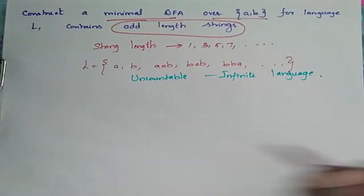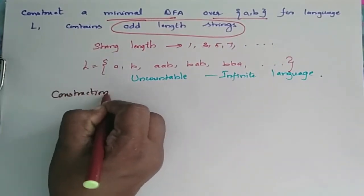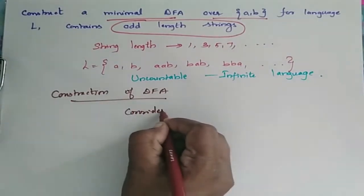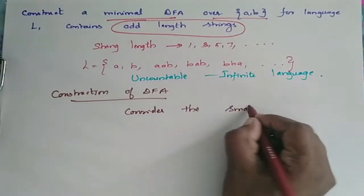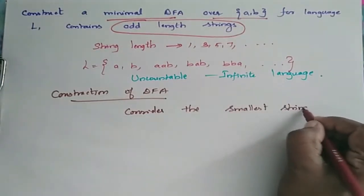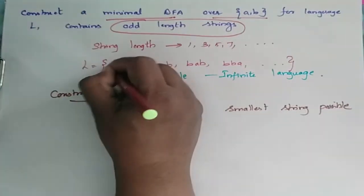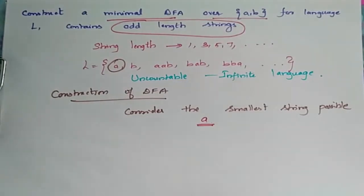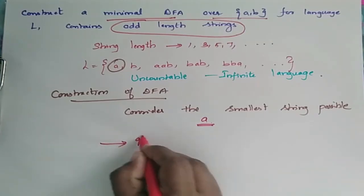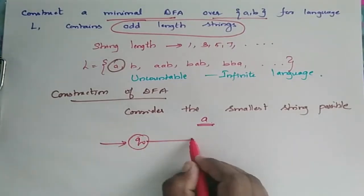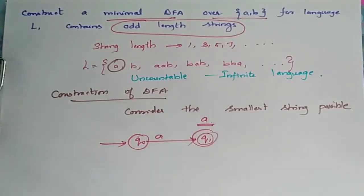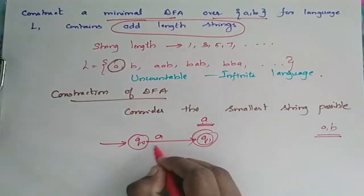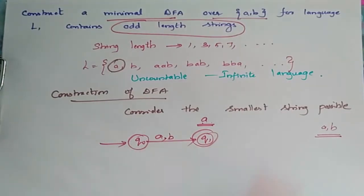Now we go for the construction of the DFA. Whenever you go for constructing a DFA, always consider the smallest string possible. The smallest string possible here is A. So we construct a DFA for this: Q0 is the initial state. When it accepts A or B, it moves to Q1, which is the final state. When the string length is 1, it may be A or B, so we accept either and reach the final state.